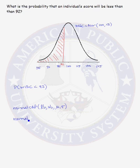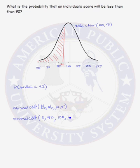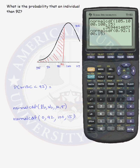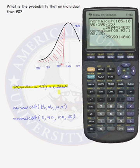Using the normalCDF function on the calculator, our lower bound is way out to the left — make sure it is more than three standard deviations below the mean, so we'll pick 0. The upper bound is 92, with a mean of 100 and a standard deviation of 15. Going to 2nd, VARS, down to number 2, normalCDF: enter 0, 92, 100, 15. This gives us a probability of approximately 0.2969, so the probability that a WISC score will be less than 92 is approximately 30%.